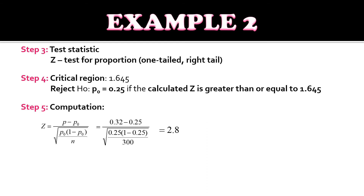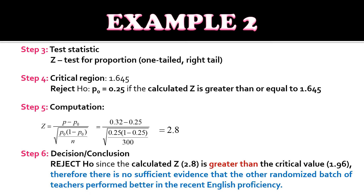Comparing 2.8 to the critical value of 1.645, for our decision and conclusion: we reject the null hypothesis since the calculated Z of 2.8 is greater than the critical value of 1.645. Therefore, there is sufficient evidence that the other randomized batch of teachers performed better in the recent English proficiency.